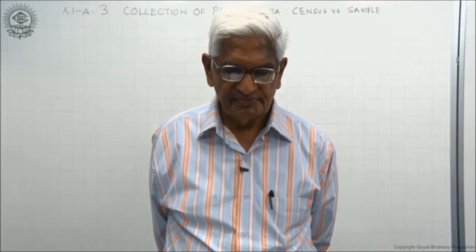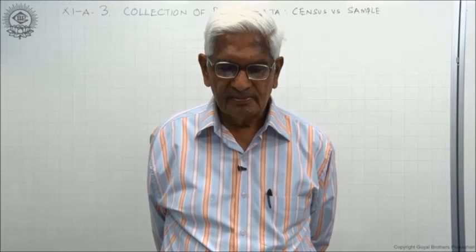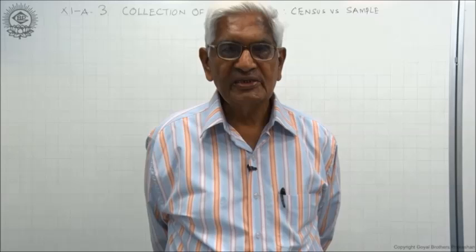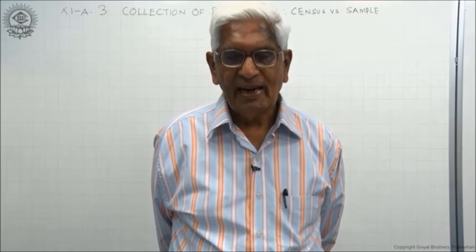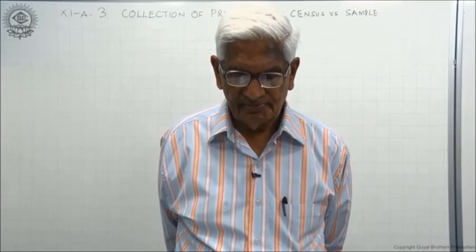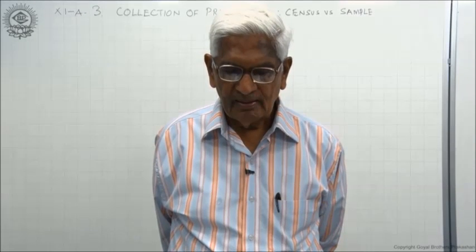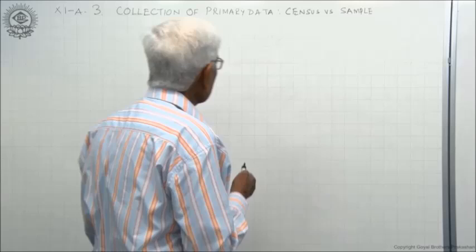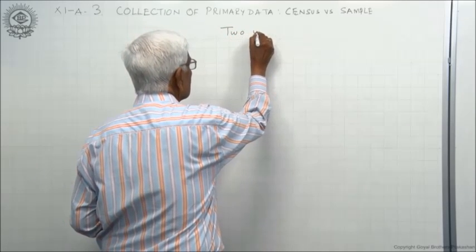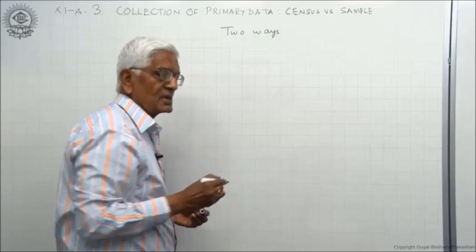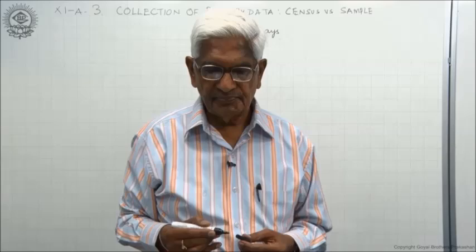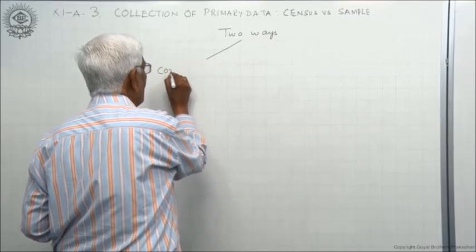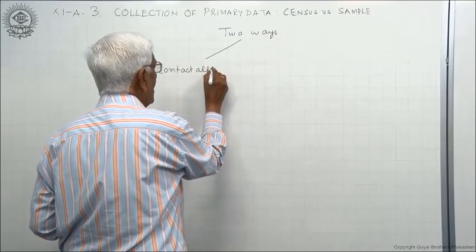Let us see how we can proceed. Suppose we have to conduct a study of 2,000 children and their parents in a school. There are two ways of making this study. One way is to contact all 2,000.